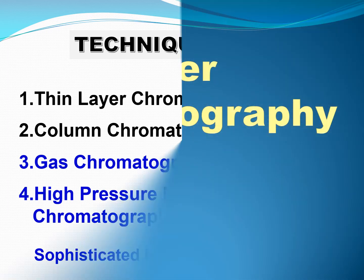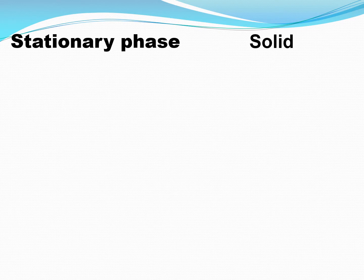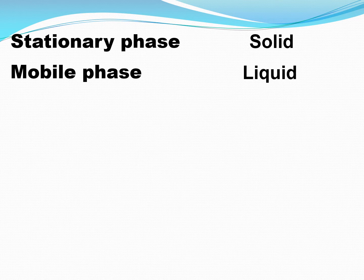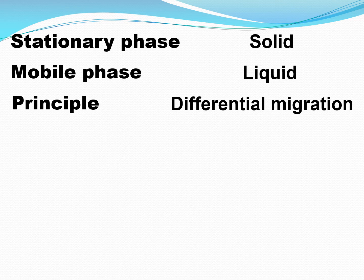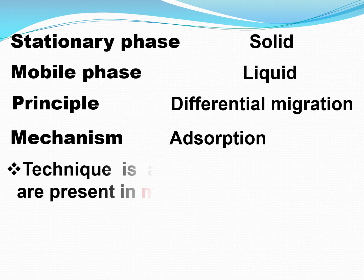We will start with thin layer chromatography, short form TLC. From the name itself we get some idea — 'thin layer' refers to the stationary phase. The stationary phase is taken as a thin layer. The stationary phase is a solid, the mobile phase is a liquid, and the principle is differential migration.